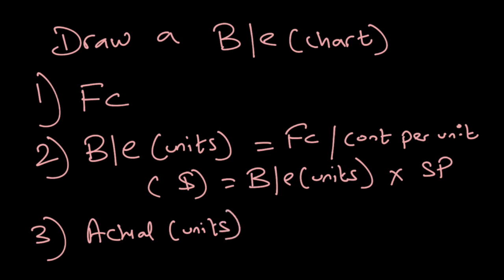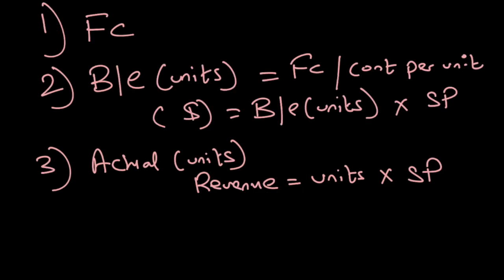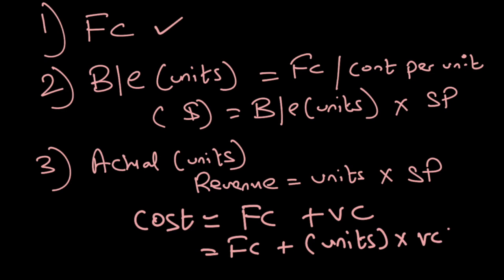At the actual units, you need to find your revenue and your cost. For revenue, take your actual units and multiply by the selling price to find your actual revenue. For actual cost: actual cost is made up of fixed cost plus variable cost. Fixed cost is already given. For variable cost, take the actual units and multiply by the variable cost per unit — add up all your direct material, direct labor, and any variable production overheads and multiply by the number of units to locate your actual cost.